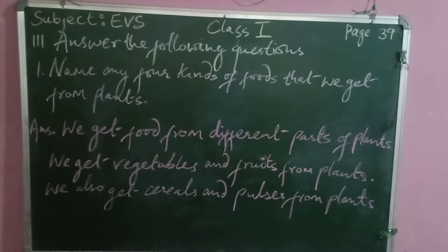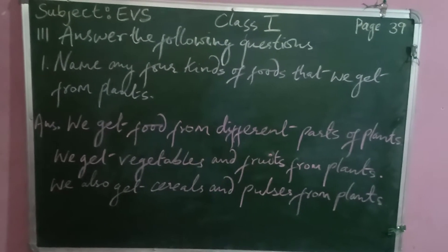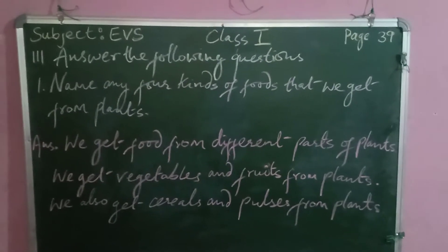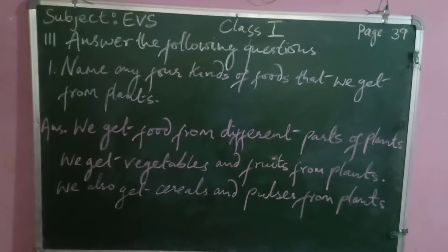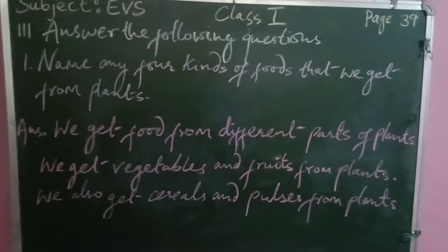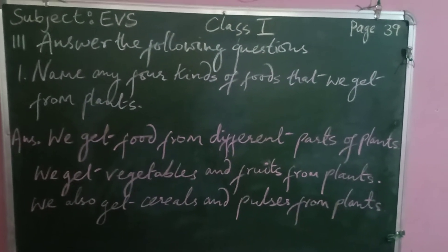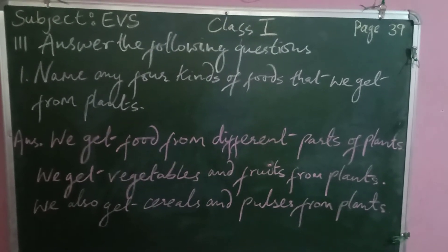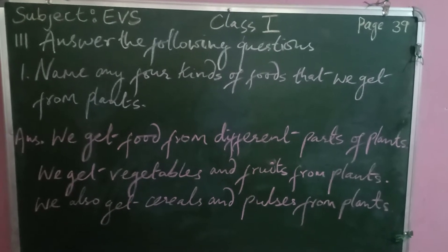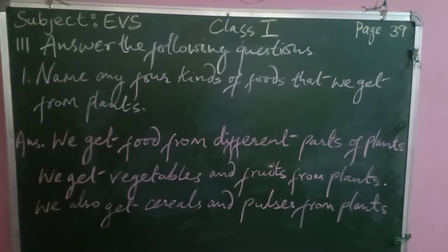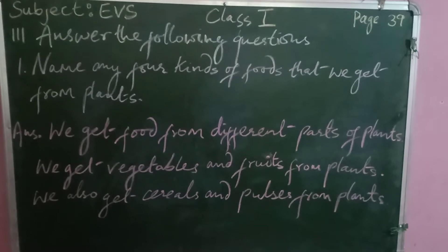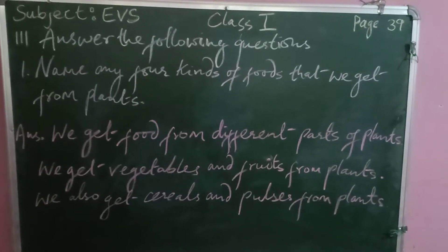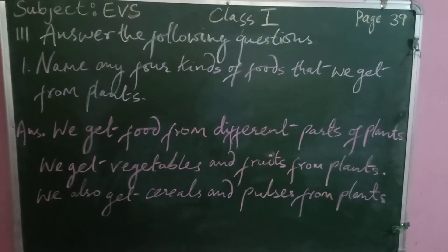The next section is answer the following questions. Question number one: name any four kinds of food that we get from plants. The answer to write is: we get food from different parts of plants. We get vegetables and fruits from plants. We also get cereals and pulses from plants.